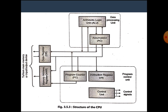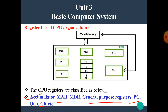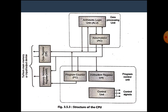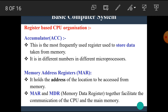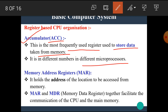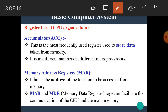Now let's see the details about each register one by one. The first one is the accumulator or ACC register. This is the most frequently used register, used to store data taken from memory. Its size differs across different microprocessors. The accumulator is the most versatile register of any central processing unit or processor.